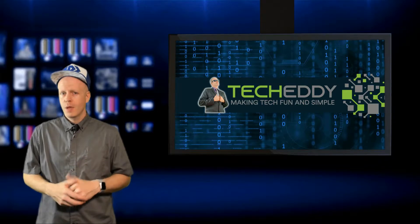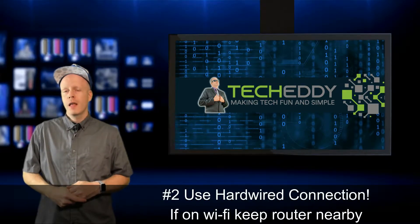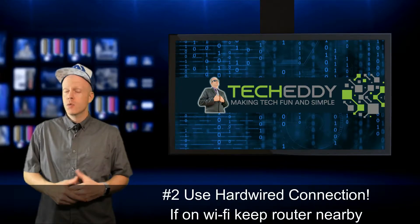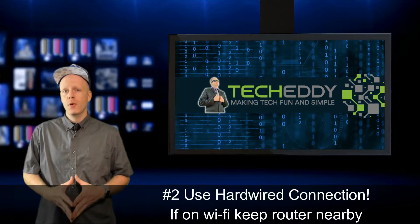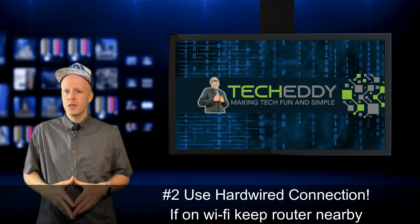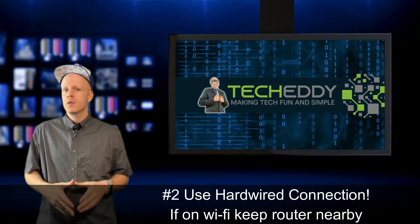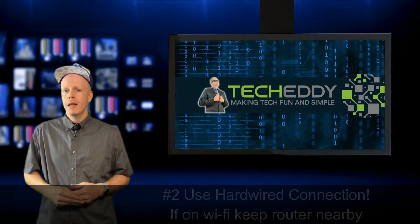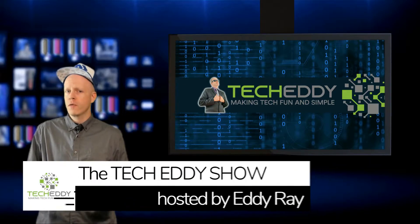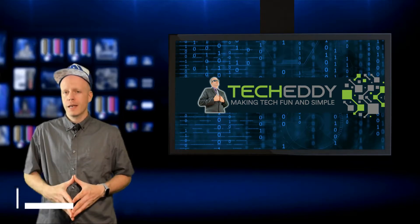Number two. If possible, use a hardwired Ethernet connection to the computer you'll be live streaming from. This will ensure you get the fastest and most stable connection possible. If you can't, and Wi-Fi is the only option, ensure there is no interference and that your signal is maxed out. Make sure you use the 5GHz Wi-Fi band — that will be the best option over 2.4, which can have more interference. Place your modem or router in the same room you'll be streaming from for the best connection.